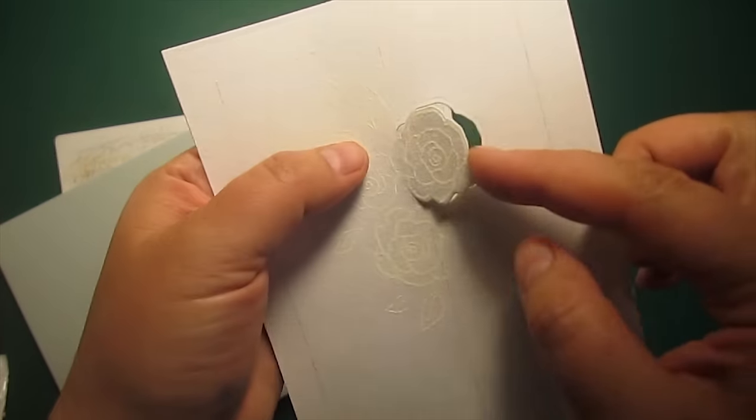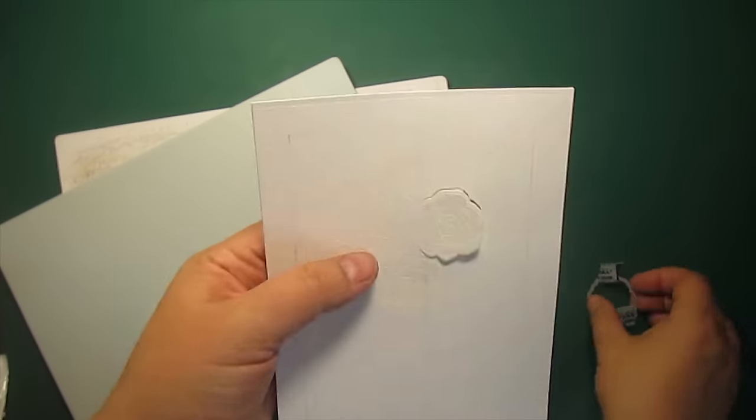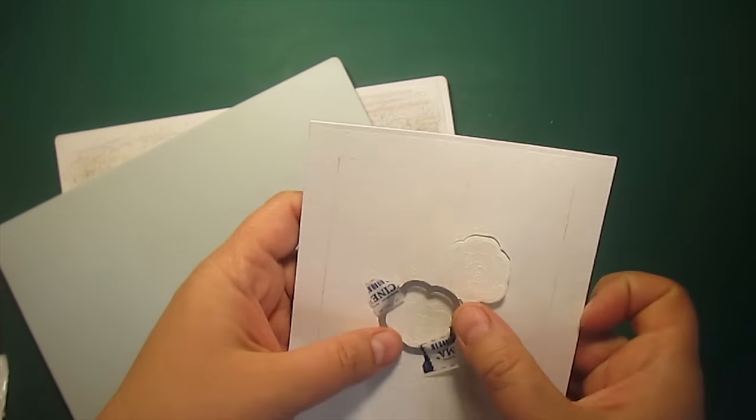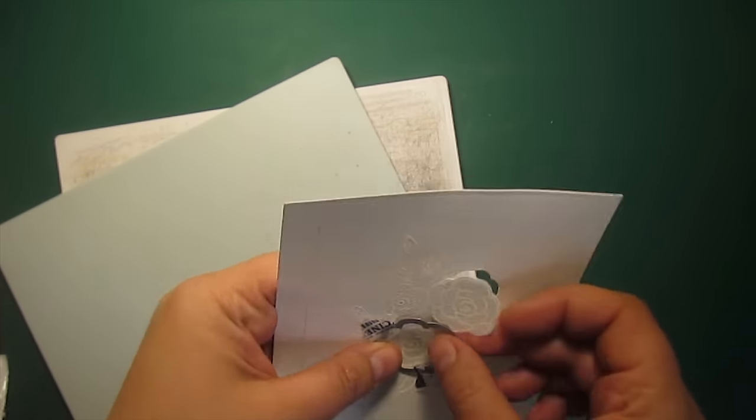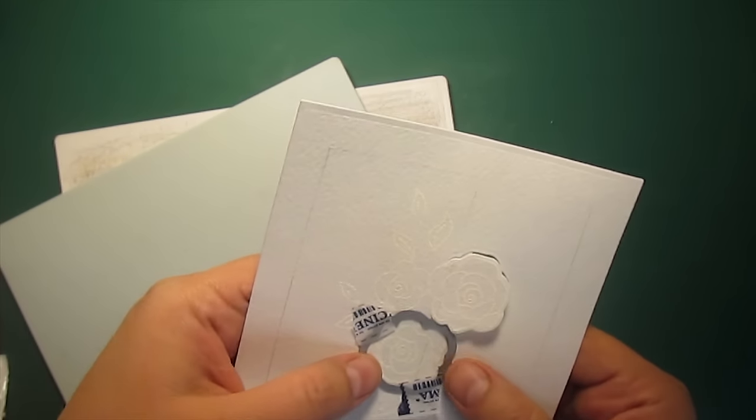This way the image is cut out only to the right side of the line. Then I'm going to repeat the same process with the second rose.